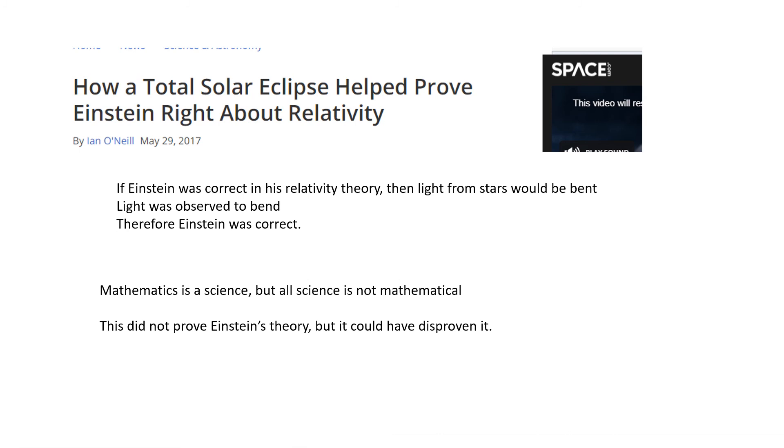Now those fallacies actually sometimes happen. This was an article that was published in 2017 and talked about how a total solar eclipse helped prove, and that's a loaded word, Einstein right, that Einstein is correct about relativity. Well, and here was the argument that was presented in the paper. If Einstein was correct in his relativity theory, then light from the stars would be bent. Light was observed to be bent. Therefore Einstein was correct.